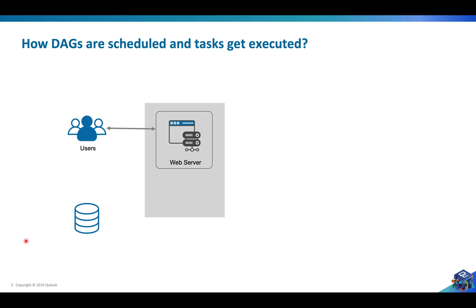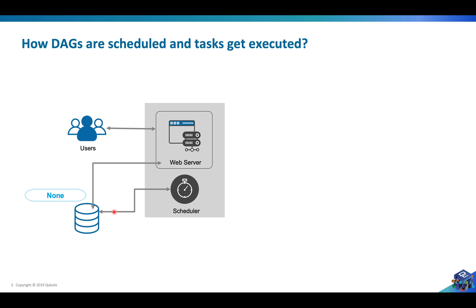Now let's talk about how these states change. The user interacts with the web server and turns on the DAG. The web server then updates the status of the task in the database and sets it to none. Then the scheduler picks up all the tasks and DAGs whose dependencies have been satisfied, and the status of the task instance is changed to scheduled.